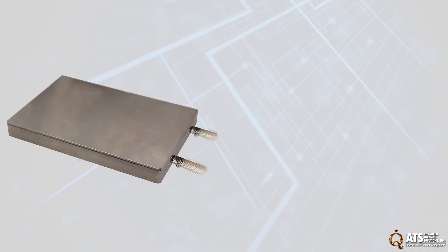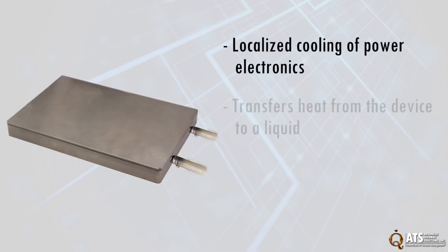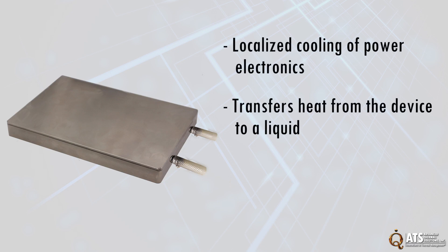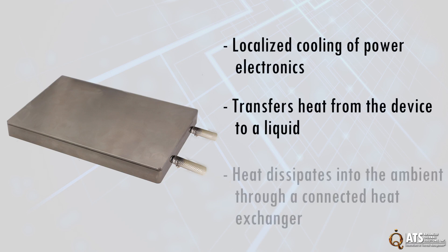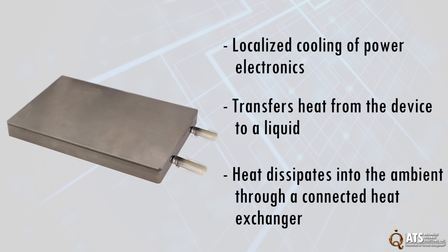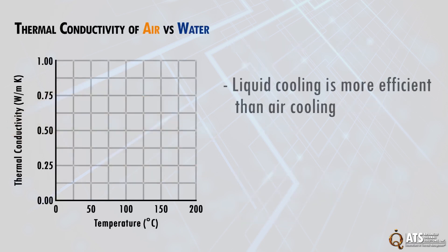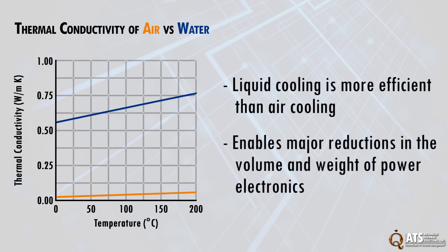Cold plates provide localized cooling of power electronics by transferring heat from the device to a liquid that flows to a remote heat exchanger and dissipates into either the ambient or to another liquid in a secondary cooling system. Compared to air cooling, liquid cold plates provide more efficient performance and enable major reductions in the volume and weight of power electronics.